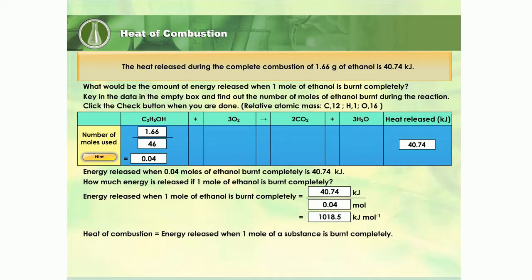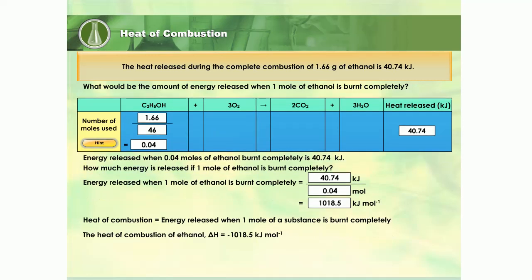The energy released when one mole of a substance is burnt completely is called the heat of combustion. Thus, we can see that the heat of combustion of ethanol is negative 1,018.5 kilojoules per mole.